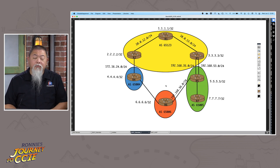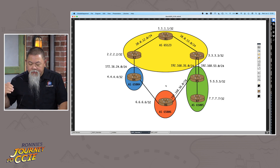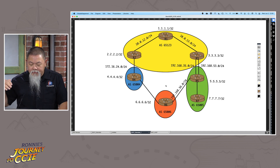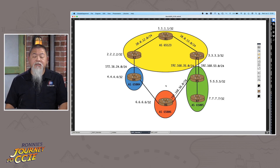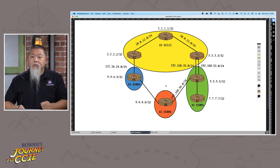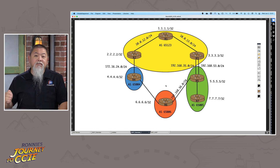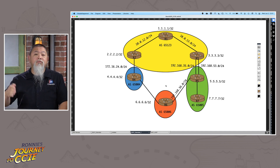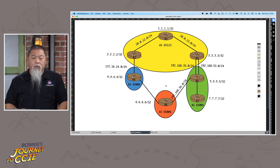What BGP MED — the Multi-Exit Discriminator — does is different. Over on the right-hand side, I have router 3 and router 5, and both are connected to the same exiting AS number, which is 65005. When we look at that, there are only two autonomous systems involved. So if I'm in AS65005 and I want traffic to take the path on the left (.35.0) or the path on the right (.53.0), I use the MED value inside of 65005 to choose which path comes into my autonomous system. That's the real key difference.